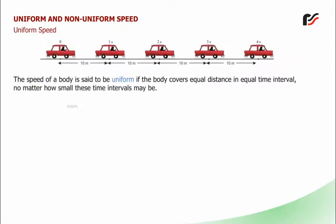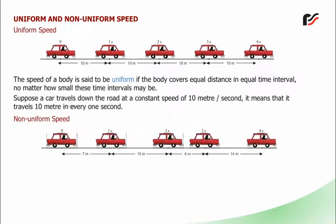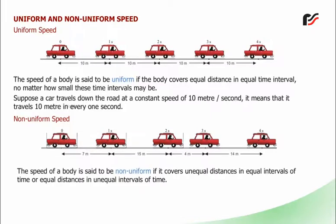Uniform and non-uniform speed: The speed of a body is said to be uniform if the body covers equal distances in equal time intervals, no matter how small those time intervals may be. Suppose a car travels at a constant speed of 10 m/s — it travels 10 metres every one second. The speed of a body is said to be non-uniform if it covers unequal distances in equal intervals of time, or equal distances in unequal intervals of time.